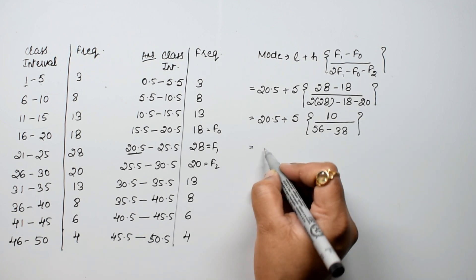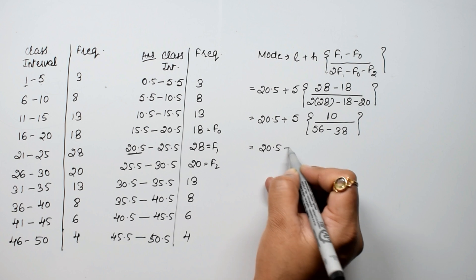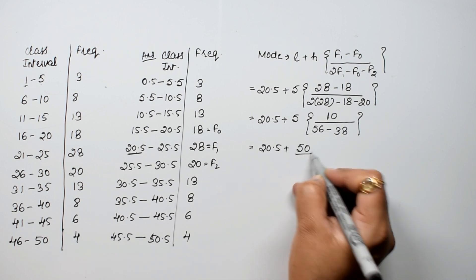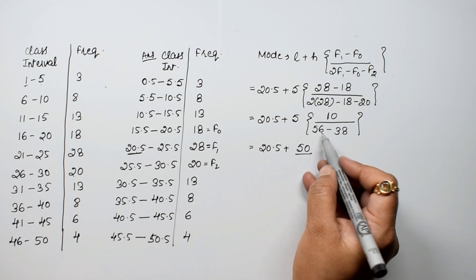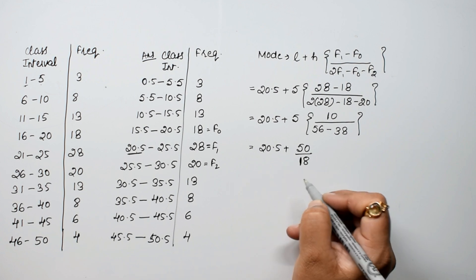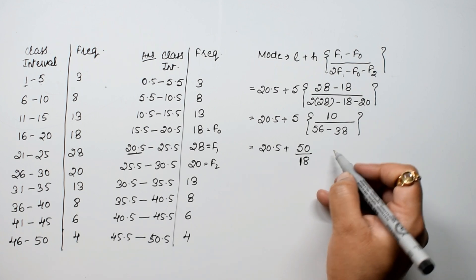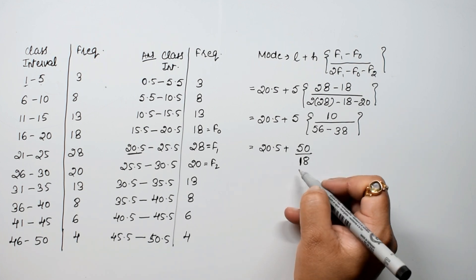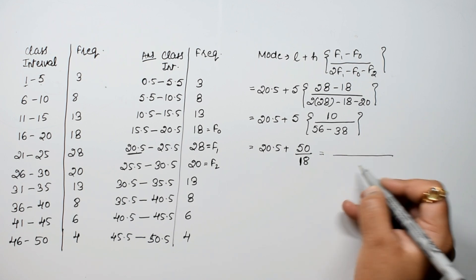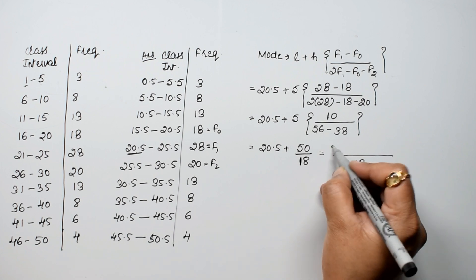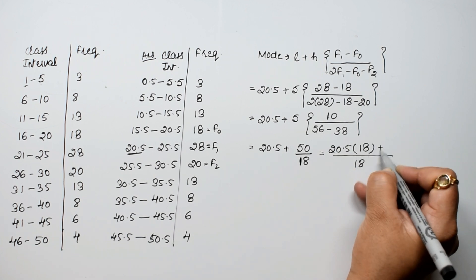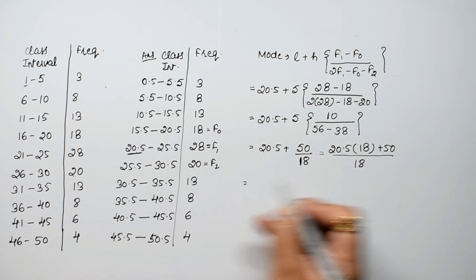This becomes 20.5 plus 50 upon 18. We can either reduce this or take LCM directly. Let's take LCM directly, which is 18. So we get 20.5 times 18 plus 50.